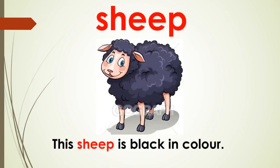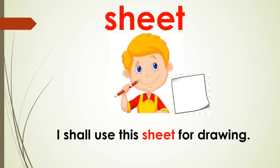Which animal is this? This is a sheep. So let's use the word sheep in a sentence: 'This sheep is black in color.' Let's make a sentence with the word sheet. Look at this boy — he is having a pencil in his hand and a sheet next to him. What is he saying? Let's hear him. He is saying: 'I shall...'